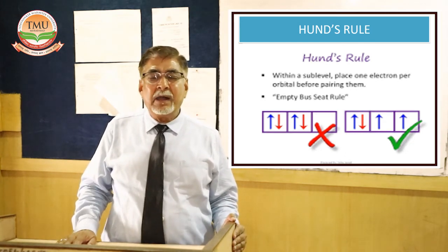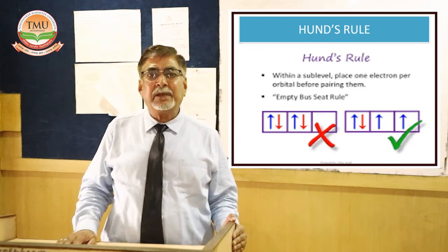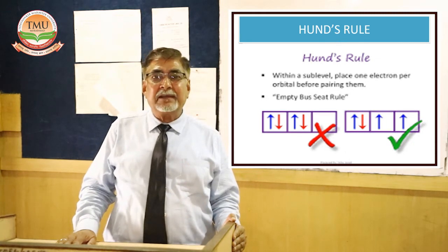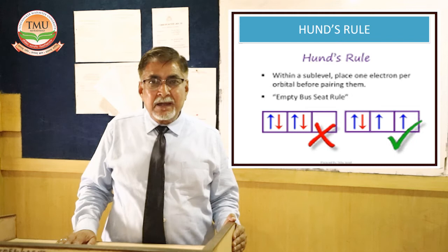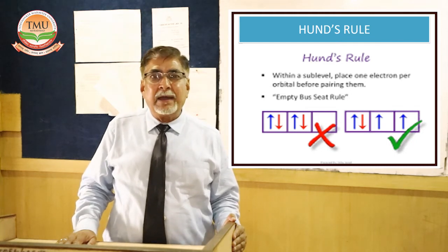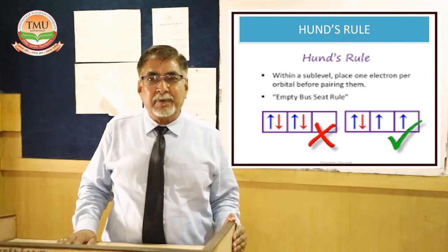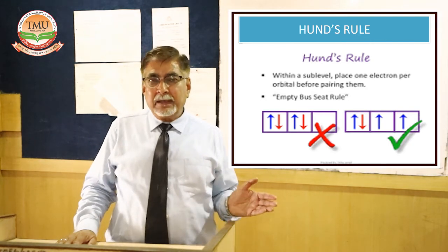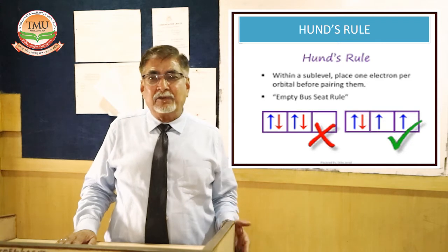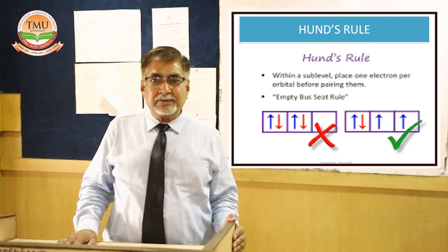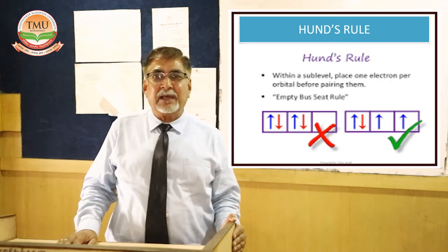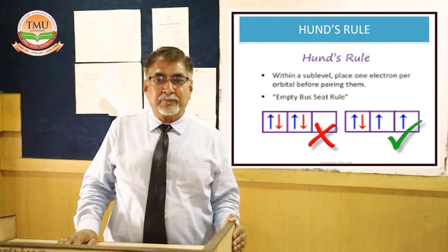For example, hydrogen has atomic number 1, so its configuration is 1s¹. Lithium has atomic number 3, written as 1s² 2s¹. Sodium has atomic number 11, written as 1s² 2s² 2p⁶ 3s¹. Writing configurations for other elements, we find that the first-group elements all show filling of the outermost s orbital, confirming they belong to Group 1 of the periodic table.